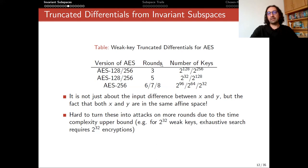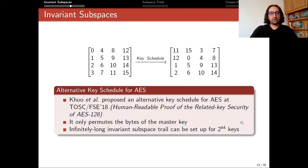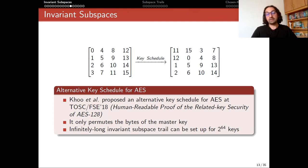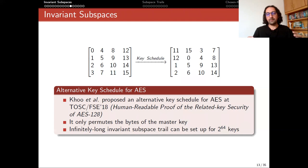We cannot directly use these distinguishers and turn them into weak-key truncated attacks on more rounds, but we can use them for different scenarios. We will talk about hashing modes of AES and show how we can attack that scenario. But before that, let's look at alternative key schedules for AES. So far, we found the invariant subspace on the keyless round function. When we look at the key schedule, we realize we don't have many weak keys and we don't have keys that satisfy the invariant subspace for infinitely many rounds.